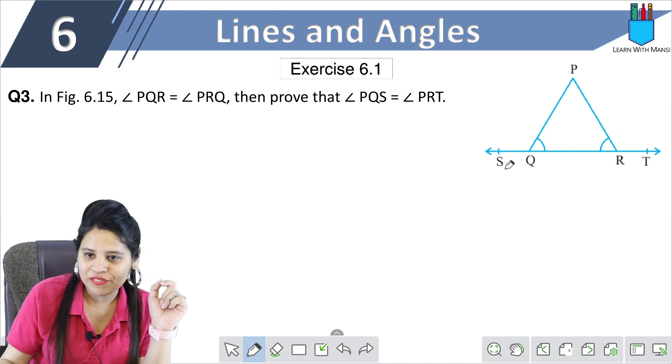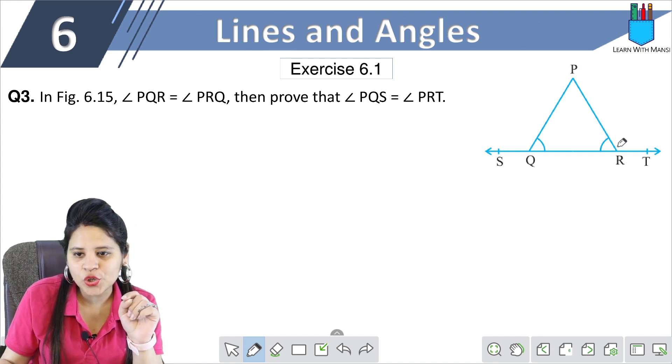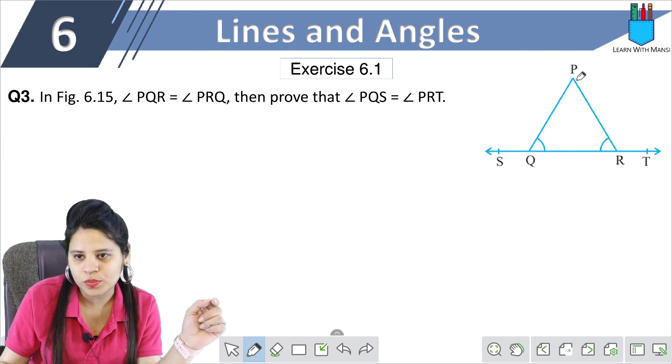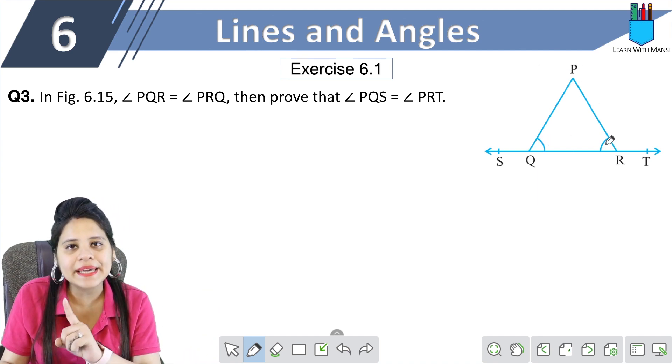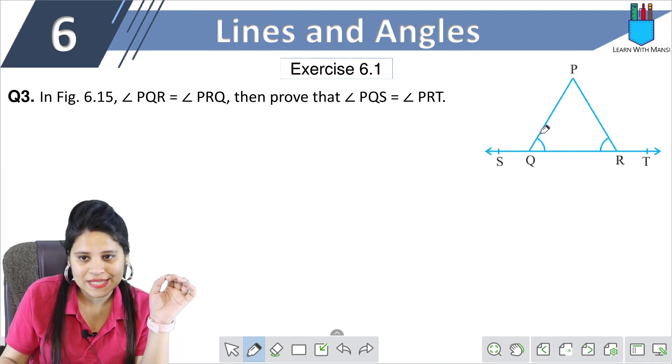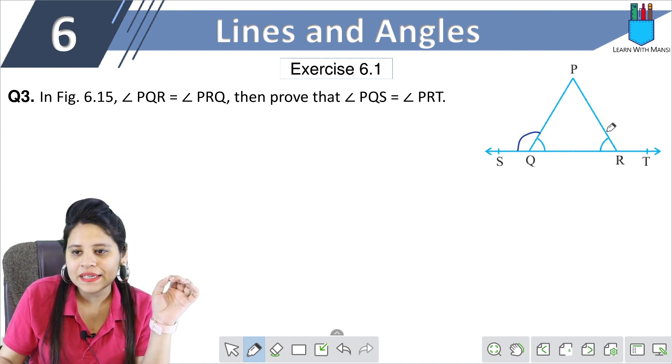In figure 6.15, this is the figure angle PQR. PQR means this angle is equal to angle PRQ. PRQ means this angle. So this angle is equal to this angle. Then prove that PQS, this angle will also be equal to PRT.